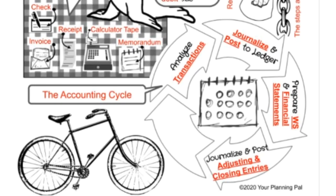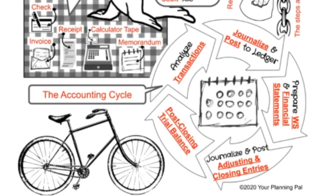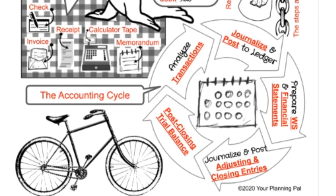We journalize and post adjusting and closing entries. Then lastly, we do a post-closing trial balance to make sure one more time that all debits equal credits, and to make sure all of our records are complete and accurate.